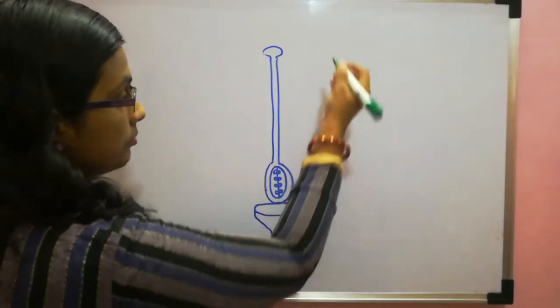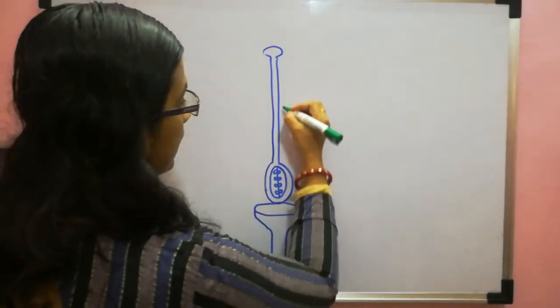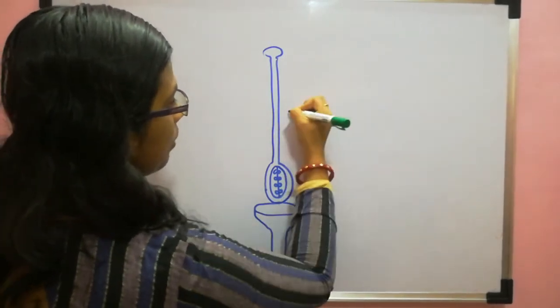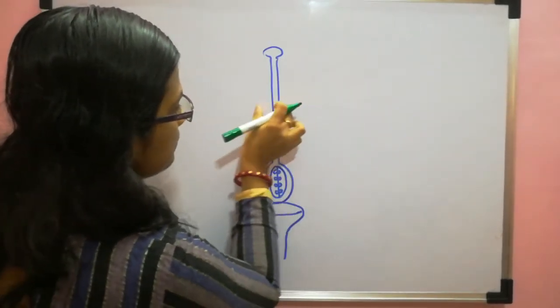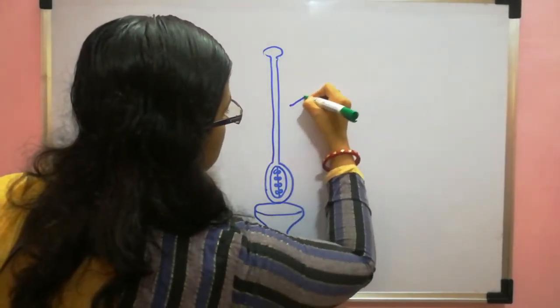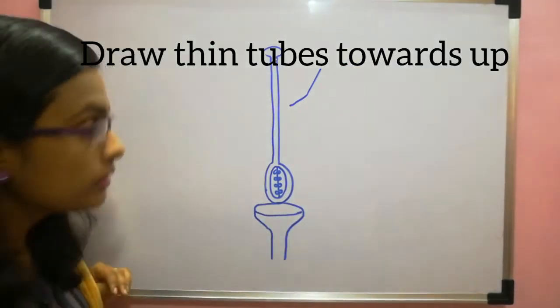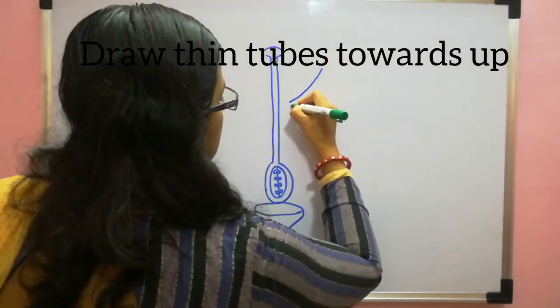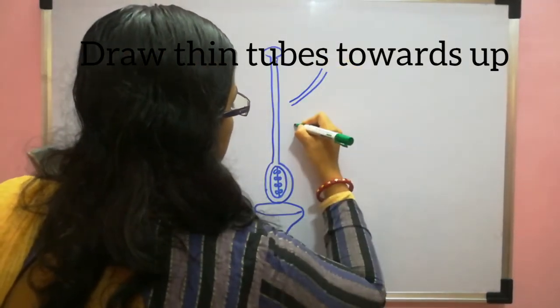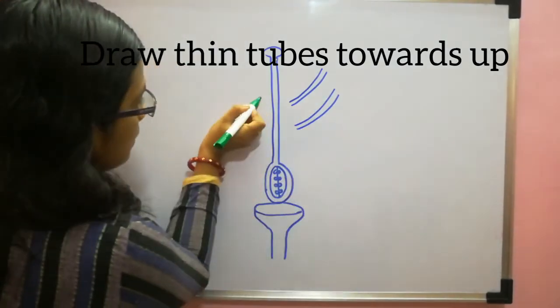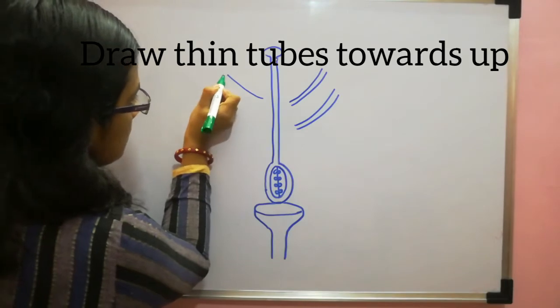Now next thing is the male part. Male part, either you can touch the male reproductive part here or you can just simply leave small space between this and you can start from here. So make tubes. Make about four like this. Two on this side and two on this side.